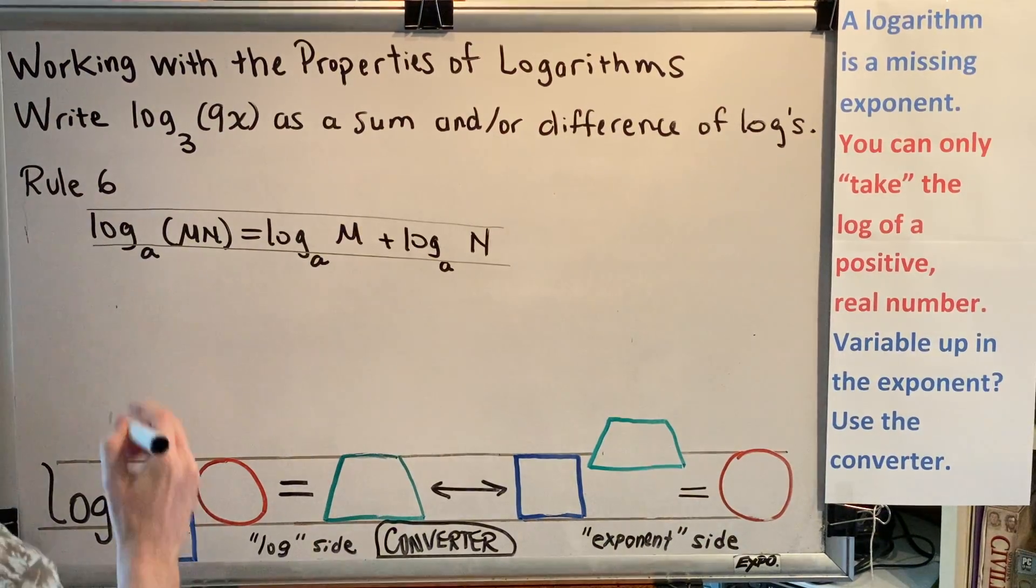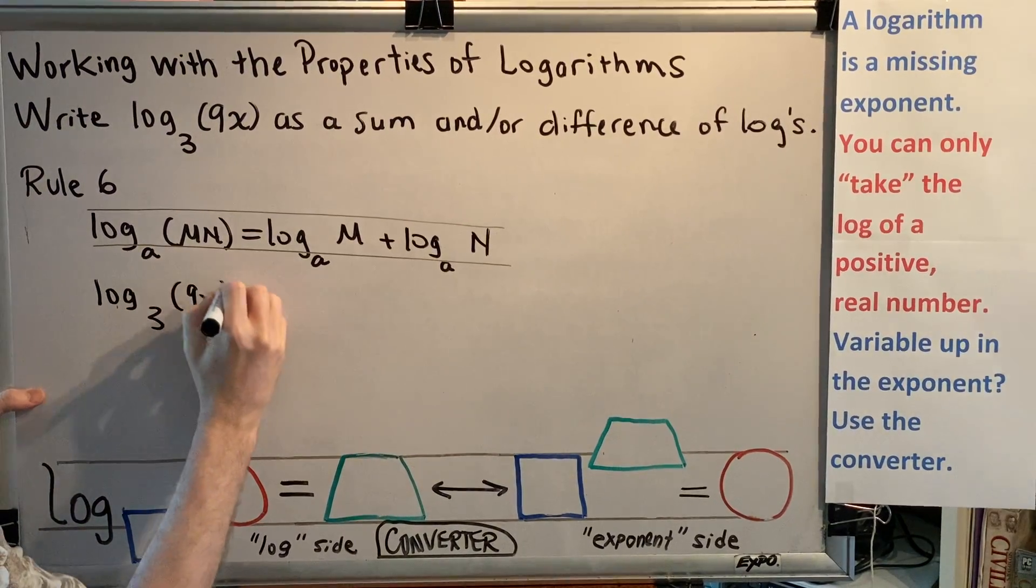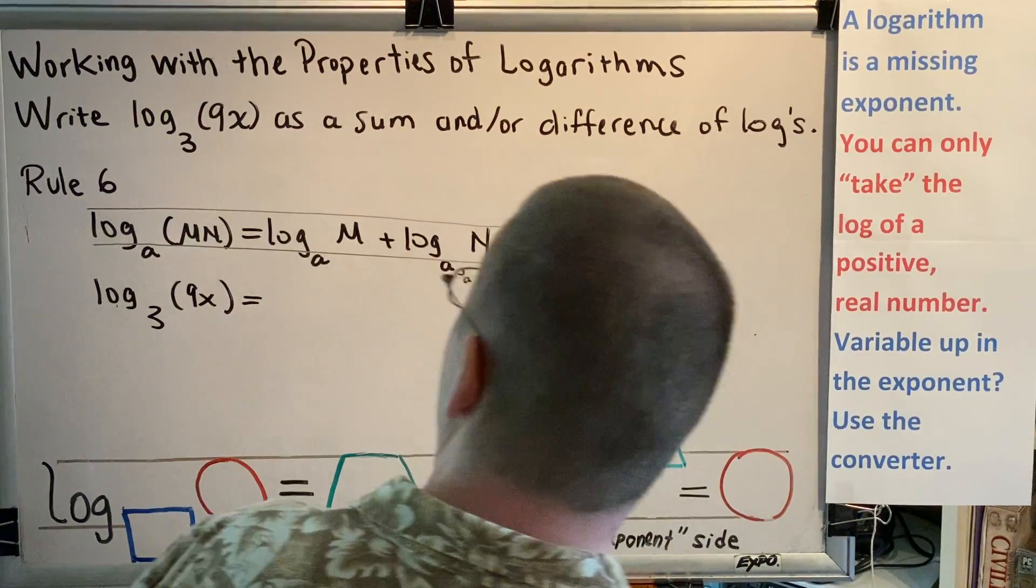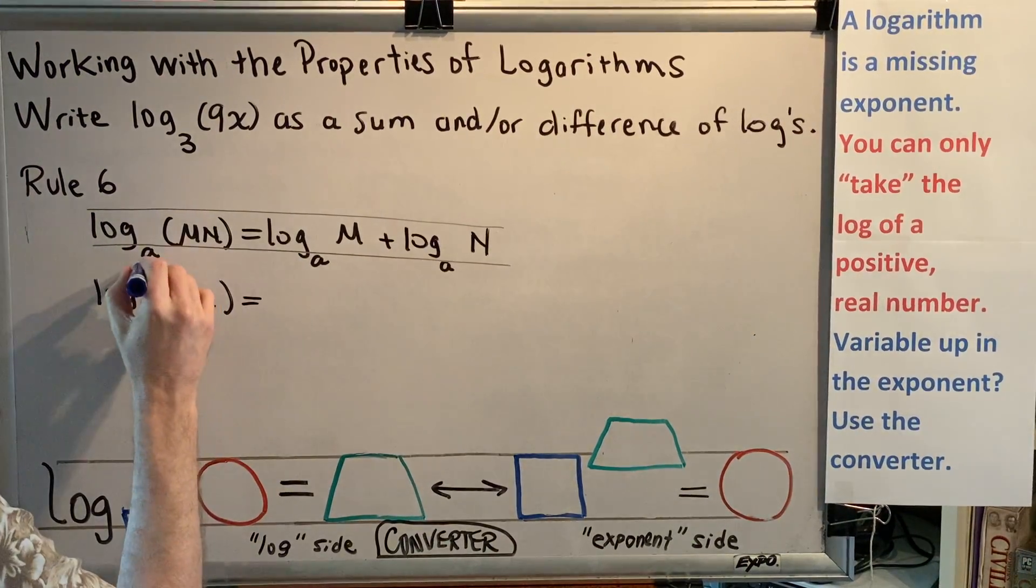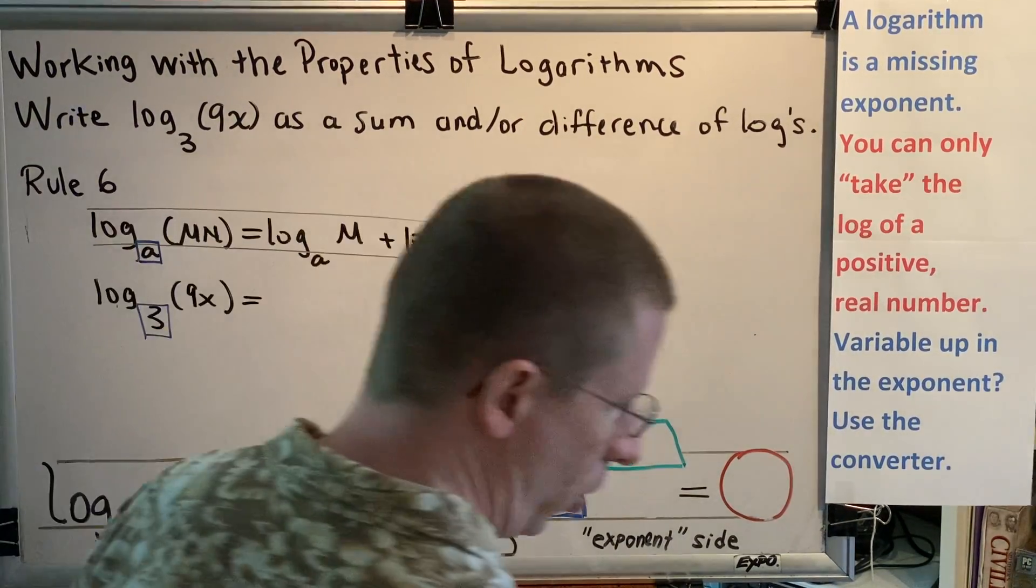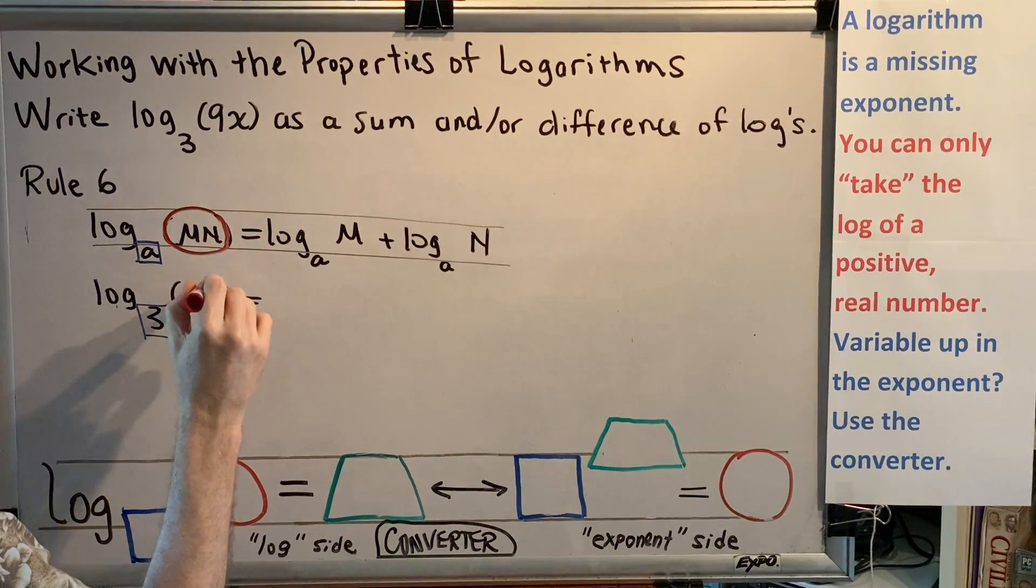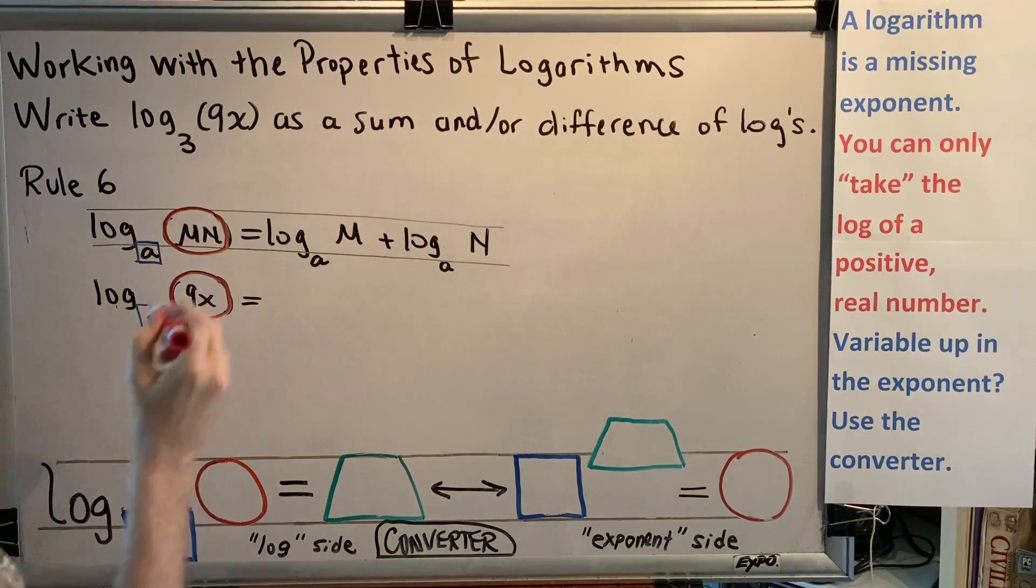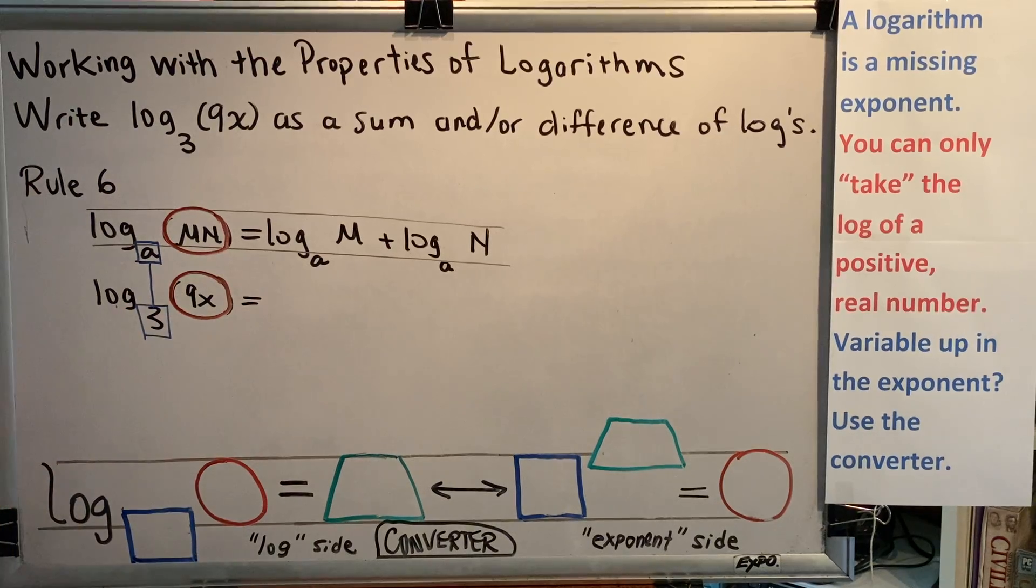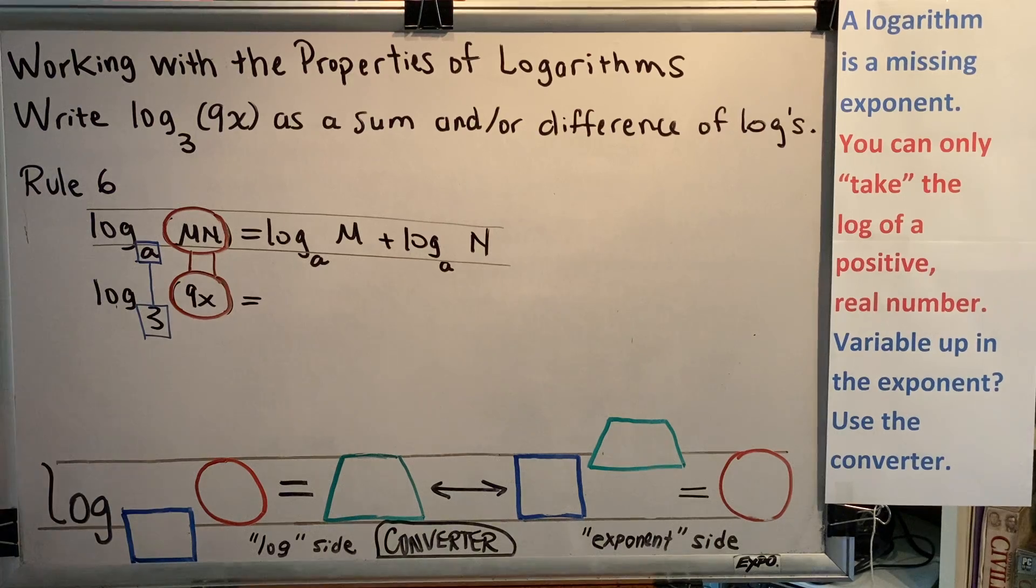Alright, so let's line up what they gave us with the rule. I'm going to put this log base 3 of the product 9x directly underneath this log rule so that we can compare. Well, what we see is in the rule, there is an a for the base, and in our problem, there is a 3. For the rule, there is an m times n for the argument, and in our problem, there is a 9 times x. What this means is that a corresponds with 3, m corresponds with 9, and n corresponds with x.